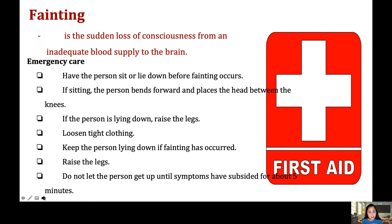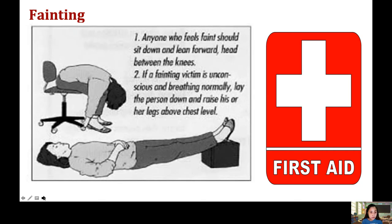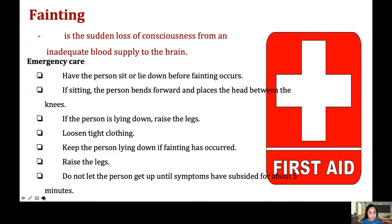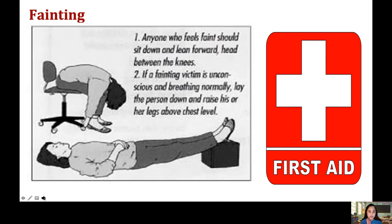Fainting is a sudden loss of consciousness from inadequate blood supply to the brain. Have the person sit or lie down before fainting occurs. If sitting, have the person bend forward and place the head between the knees, or elevate the legs higher than the heart. Loosen tight clothing. Keep the person lying down if fainting has occurred and raise the legs. Do not let the person get up until symptoms have subsided for about five minutes.